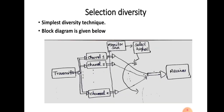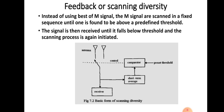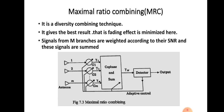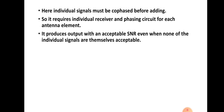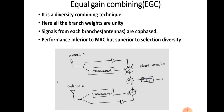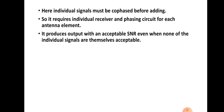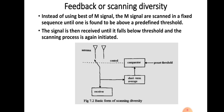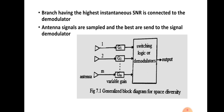The different classifications of space diversity are: selection diversity, feedback or scanning diversity, maximal ratio combining, and equal gain combining.